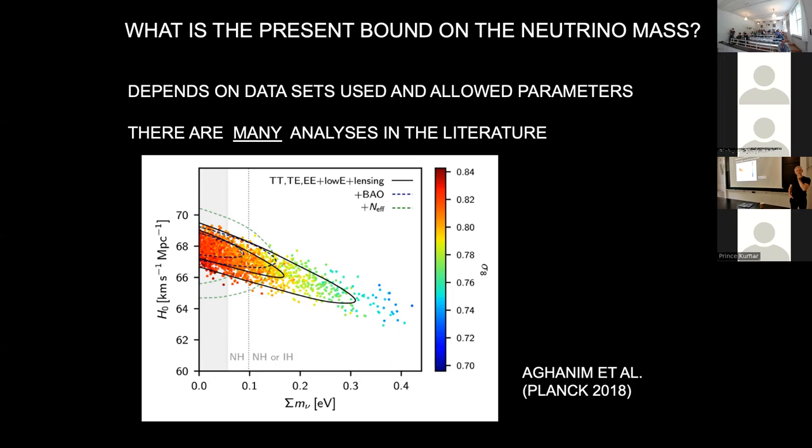Are neutrino oscillations relevant in all these simulations? No — because at the time of CMB you've basically decohered everything. They're just mass eigenstates. Flavor never plays a role anywhere in this game. In BBN, of course, it's completely different.